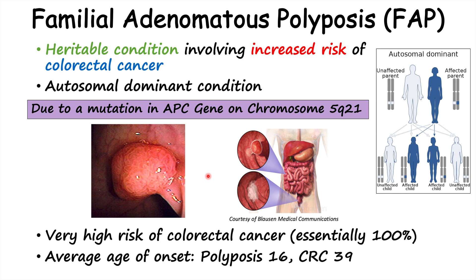We often see polyposis in the general population later in life, but in patients with this condition the average age of onset of colorectal cancer is actually 39 — a very, very young age. And again, there is an essentially 100% chance of getting colorectal cancer in familial adenomatous polyposis.